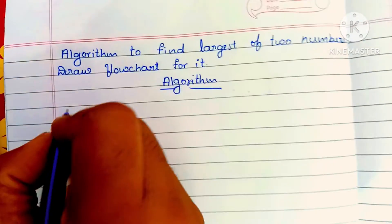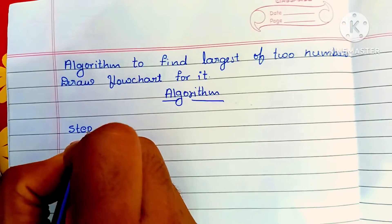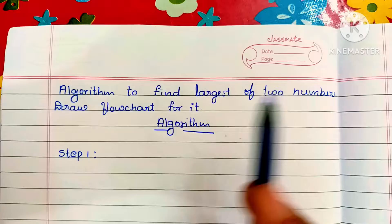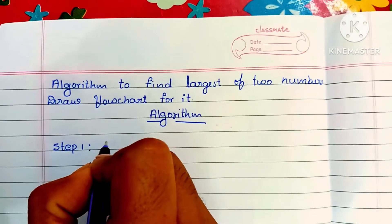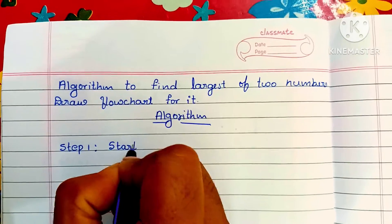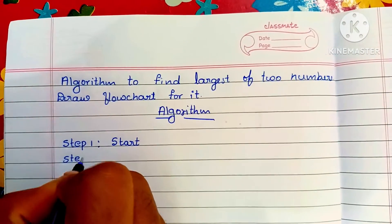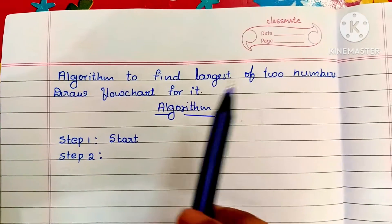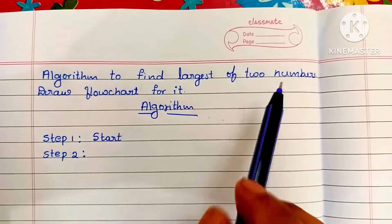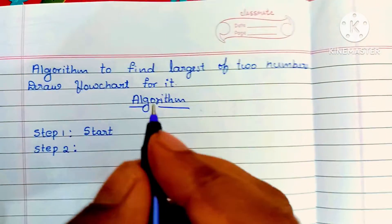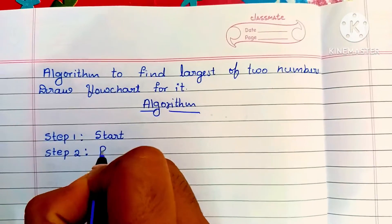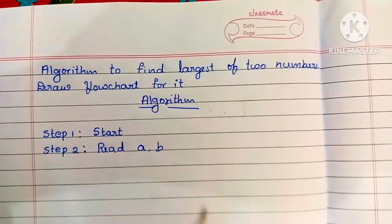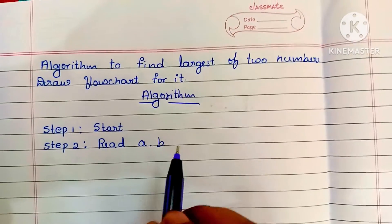In this problem we have to find the largest of two numbers. Step 1: algorithm always starts with the start statement. Step 2: we have to read the input values. Here we need to find the largest between two numbers, so we read two variables — a and b.